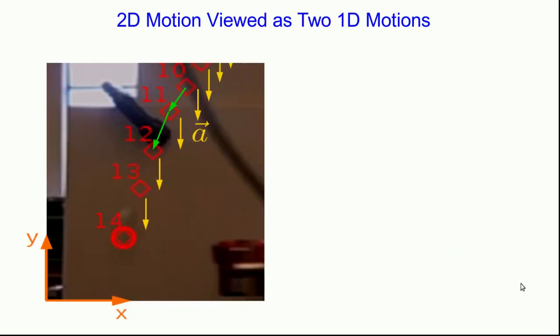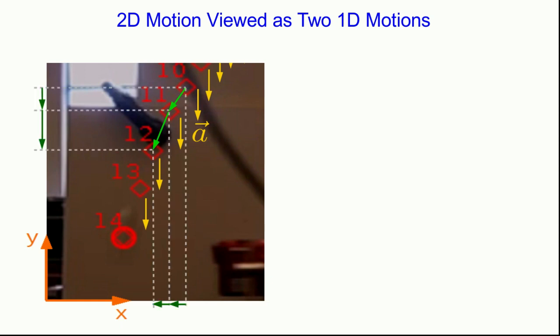To see how we think of 2D motion as two 1D motions, let's return to this falling object. One way of thinking about vector decomposition is that we are projecting the vectors onto the x and y-axes. Here are those two velocity vectors projected onto the x and y-axes, giving us the x and y component vectors. We can similarly project the acceleration vectors. In this case, the acceleration is parallel to the y-axis, so its x component is zero. Looking at the y components, this looks like a 1D motion with acceleration in the direction of motion — speeding up. And the x component looks like a 1D zero-acceleration motion.